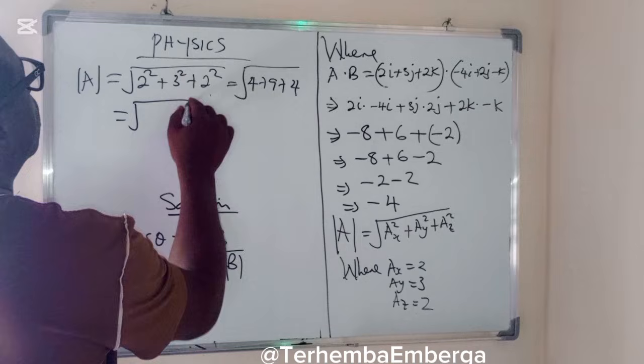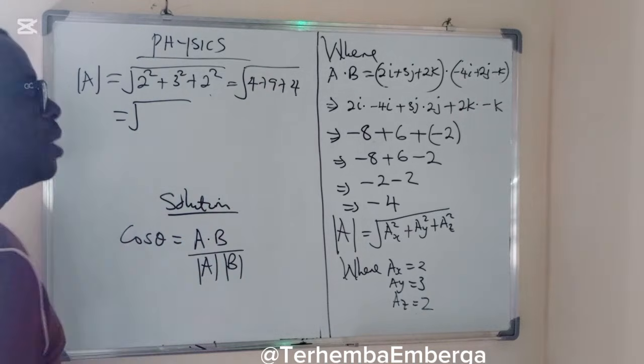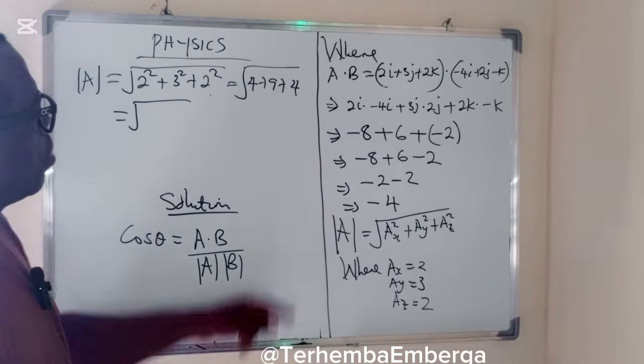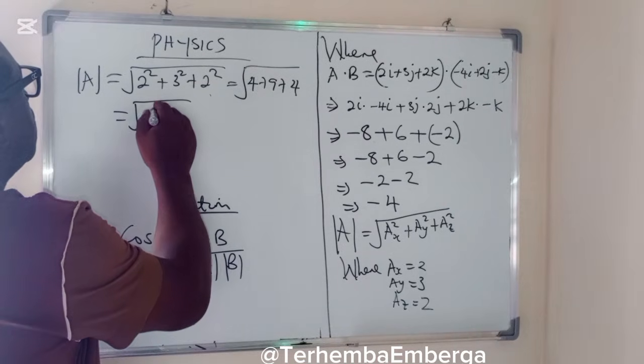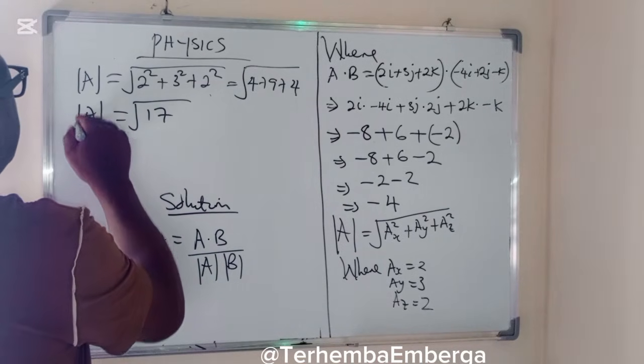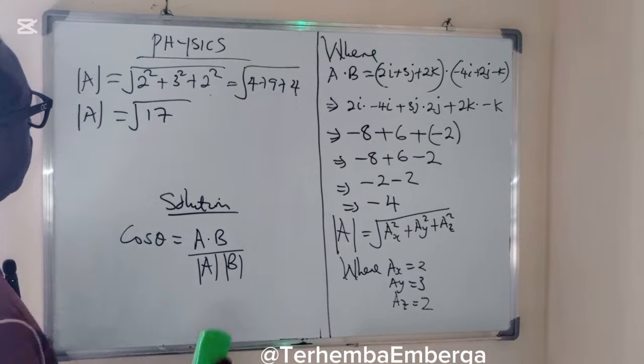Which is equal to the square root of 4 plus 9 is 13, plus 4 is 17. So modulus of A is square root of 17.